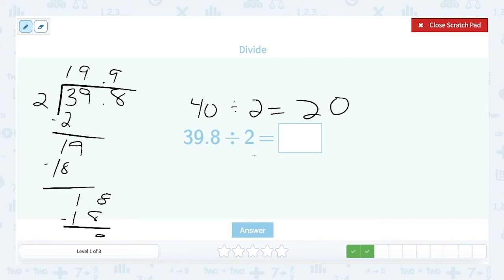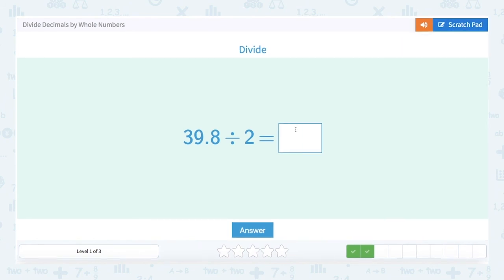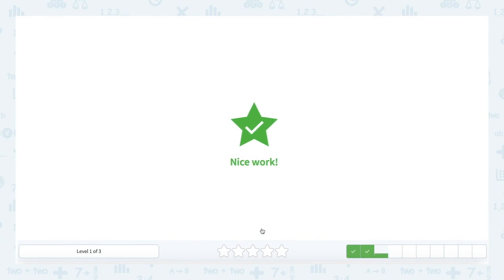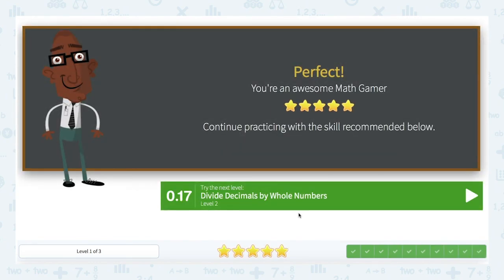All right. So I'm going to close my pad and put 19.9 into the answer box and see if it's correct. And we did it. Remember, estimate when you do these kinds of problems and use graph paper if it helps you to keep your decimal and your columns lined up better. I'll see you in the next lesson.